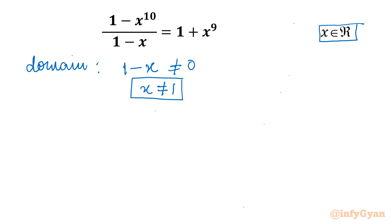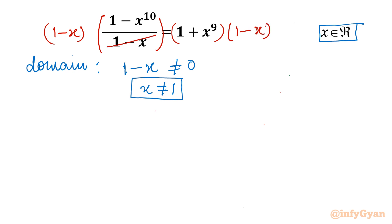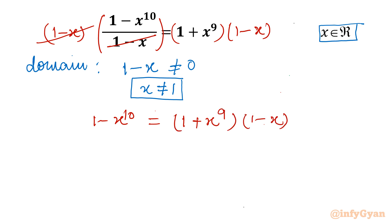Now I will consider multiplying both sides by (1 - x). On the LHS, multiplying by (1 - x) cancels the denominator. On the RHS we get (1 + x^9)(1 - x). Expanding the RHS gives 1 - x + x^9 - x^10.